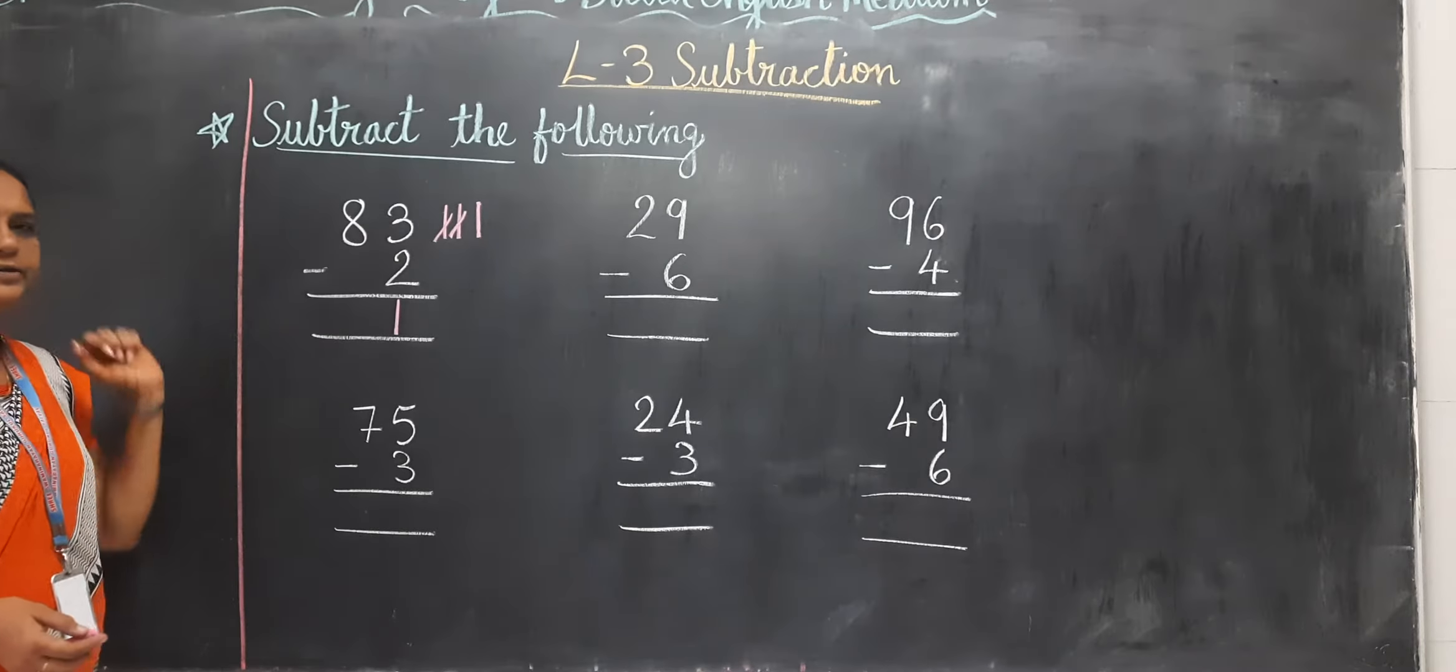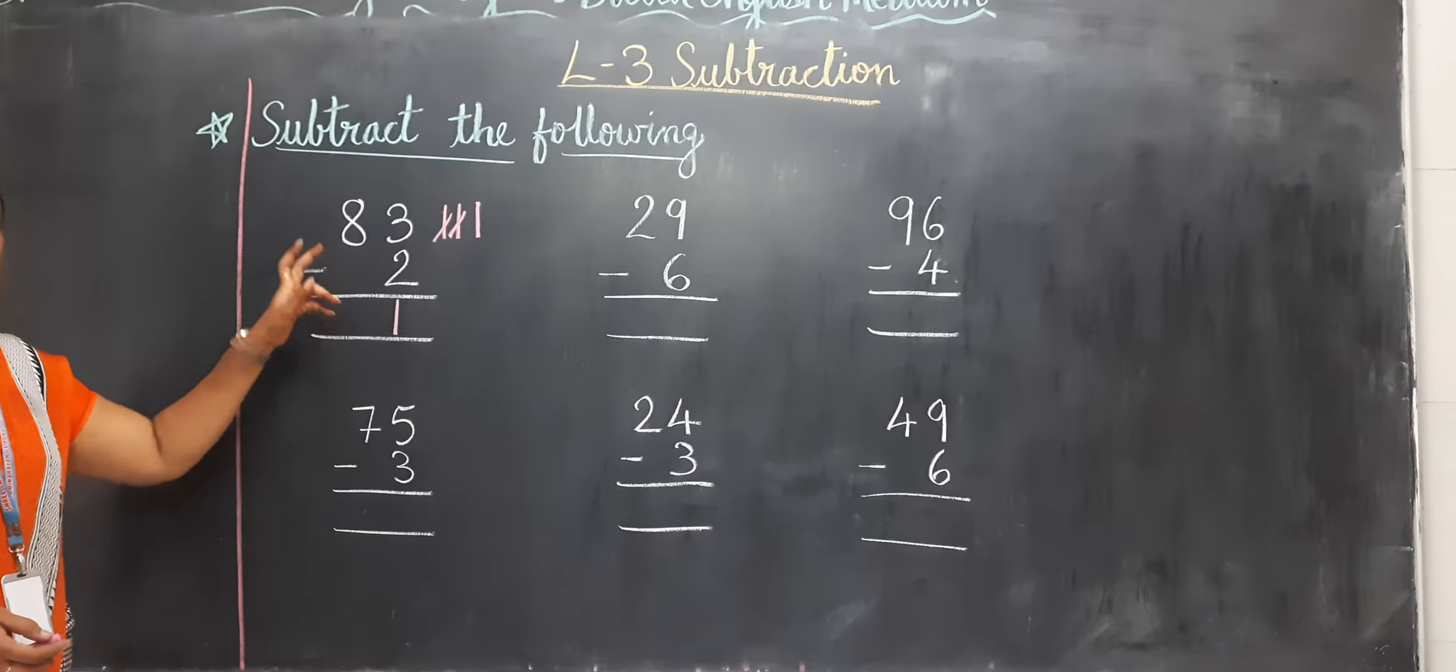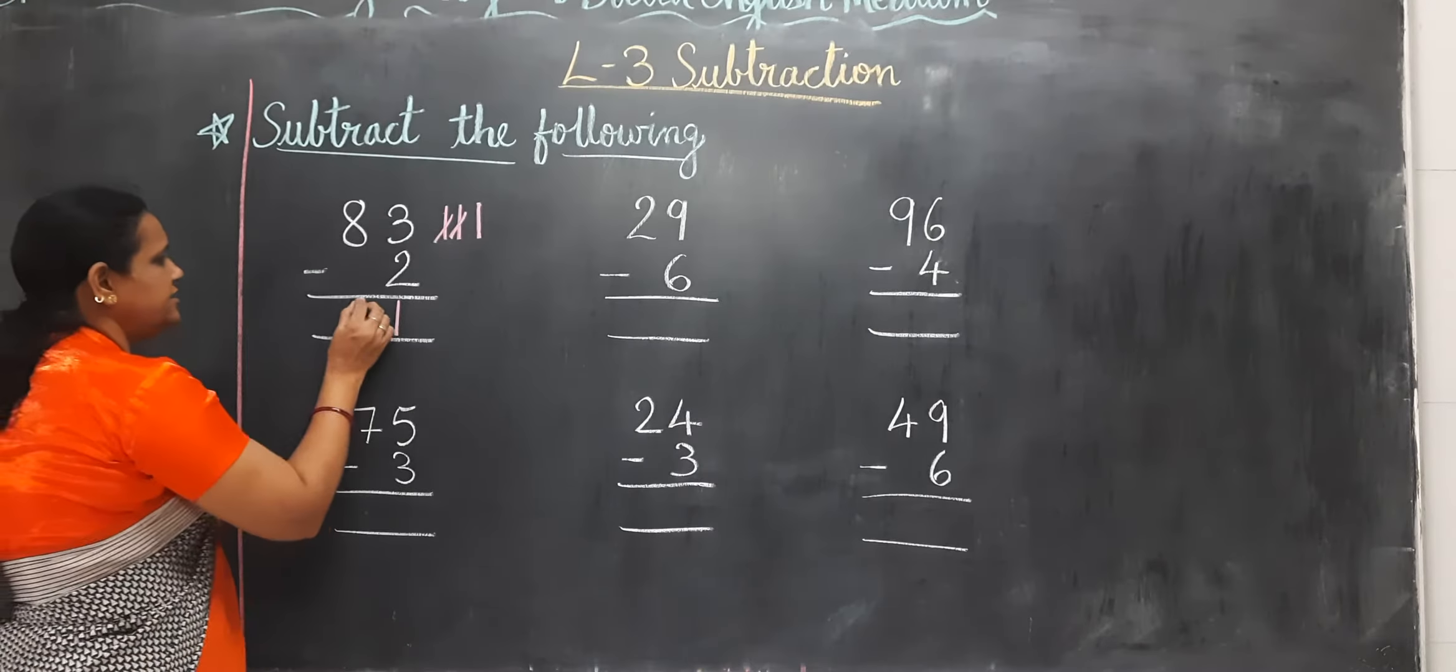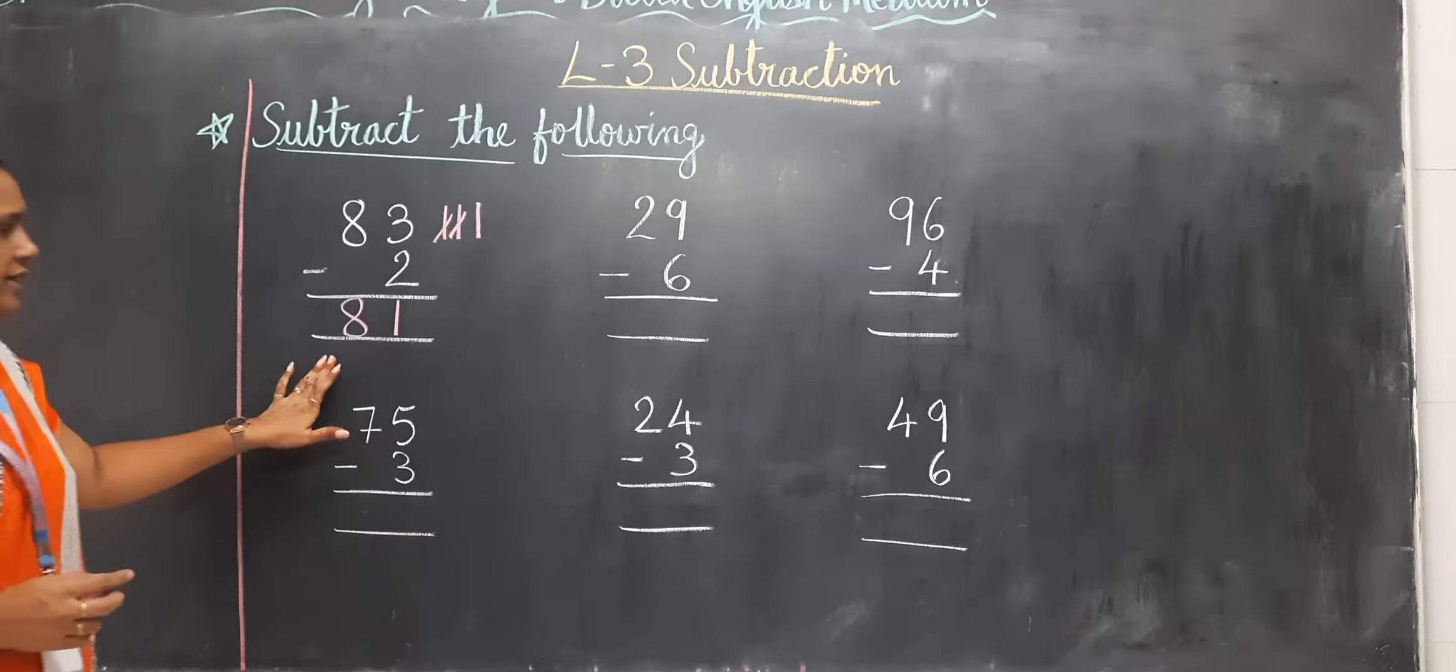Now the next one, 8. Any number is here? No number. So we have to direct complete the answer, direct carry down.